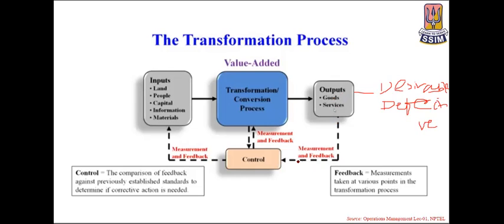From the output, we obtain measurement and feedback. Feedback consists of measurements taken at various points in the transformation process. If the goods are not as per specifications, the feedback goes to the control department, which compares it against previously established standards to determine if corrective action is needed. If the output does not meet requirements, the control process checks actual requirements against the product produced and takes corrective action, feeding changes back into the inputs.